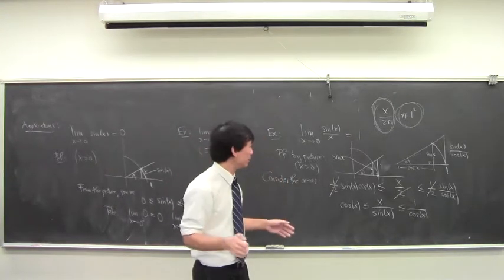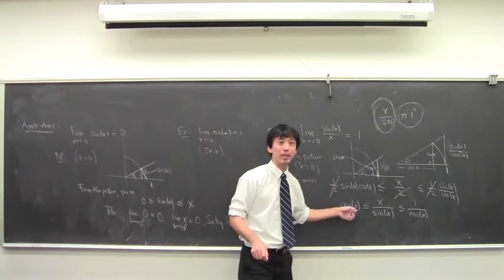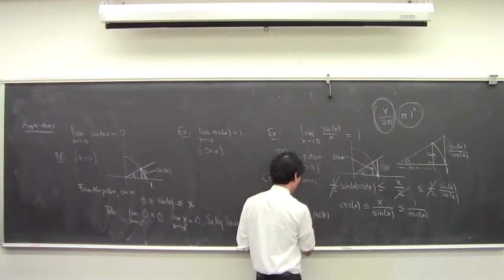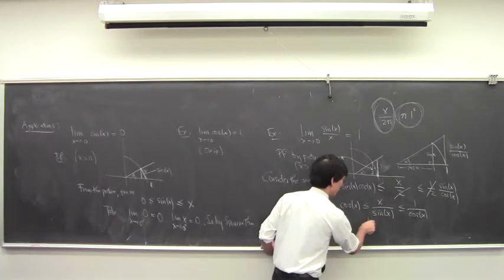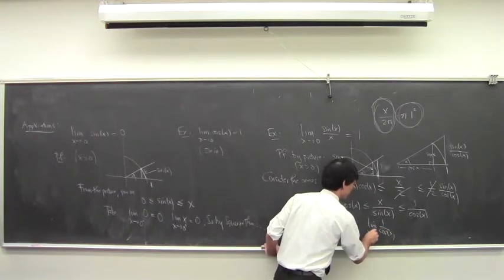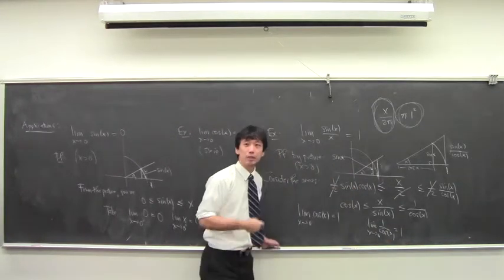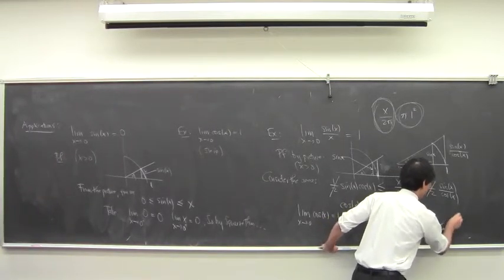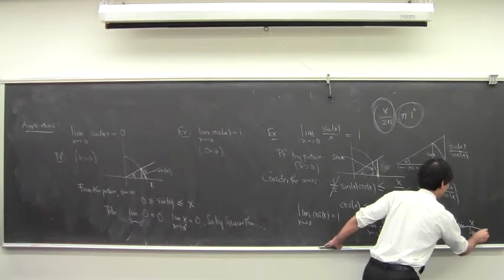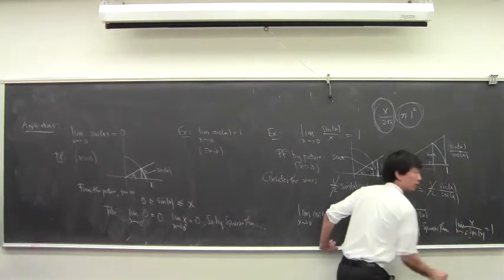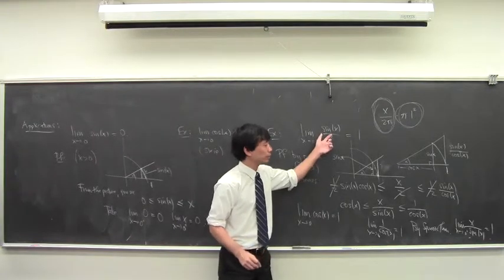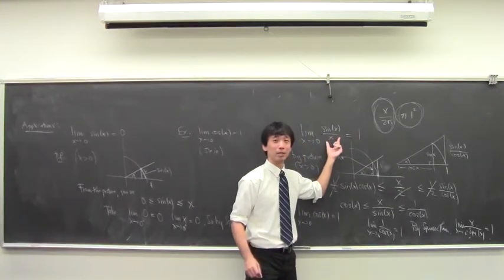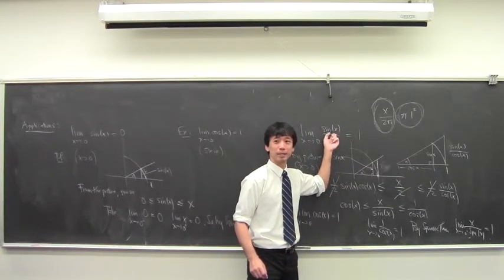Take the limit as x approaches 0. The limit of cosine(x) as x approaches 0 is 1, and the limit of 1/cosine(x) as x approaches 0 is also 1. So by the pinching theorem, the limit of the inside guy x/sine(x) is also 1. And we can take the reciprocal — that's basically saying the same thing as: the limit of sine(x)/x as x approaches 0 is also 1.